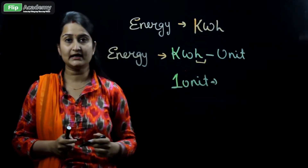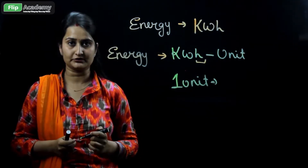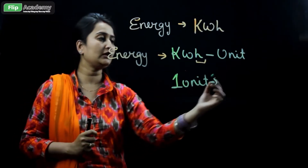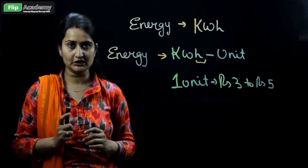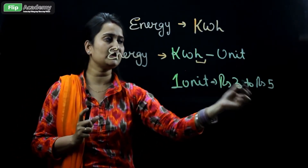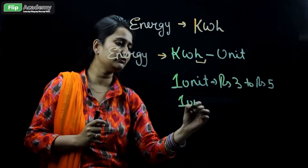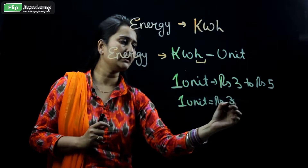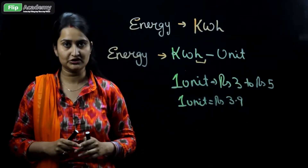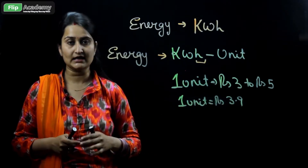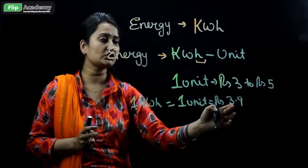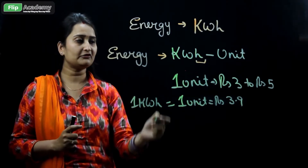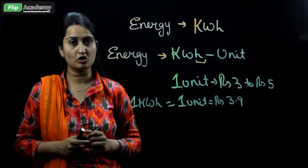To find the cost of the electricity bill, you need to find the cost per unit. Every state has a different unit cost. For example, in Uttar Pradesh, 1 unit of electricity costs between rupees 3 to rupees 5. Presently, the cost of one unit is rupees 3.9 — that is, if you consume one unit or one kilowatt hour of energy, you have to pay rupees 3.9. This is the first fundamental before calculating the cost.